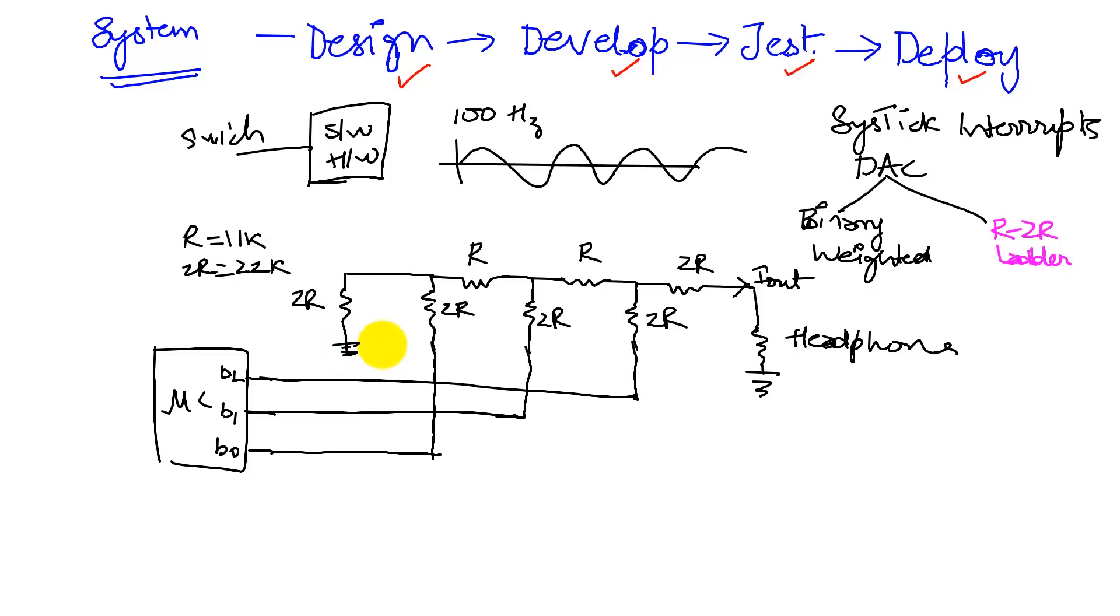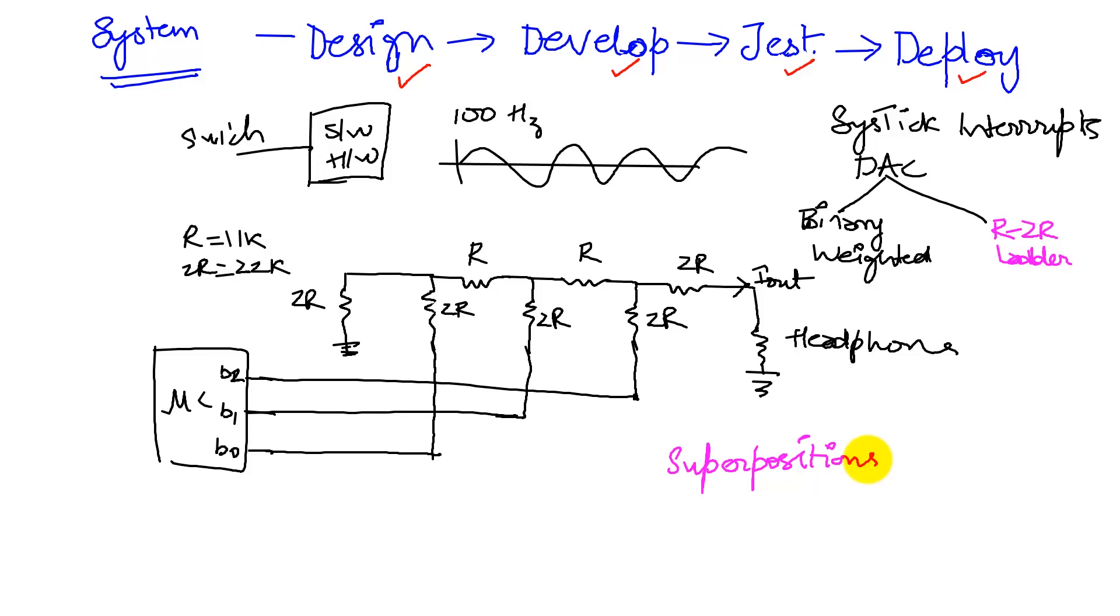So the lowest bit is furthest away from the headphones. That is correct. And we'll see why that's the case once we do our computation. Now, the analysis of this is done easily using the principle of superposition. So what does that mean? Let's take a look at how superposition works.